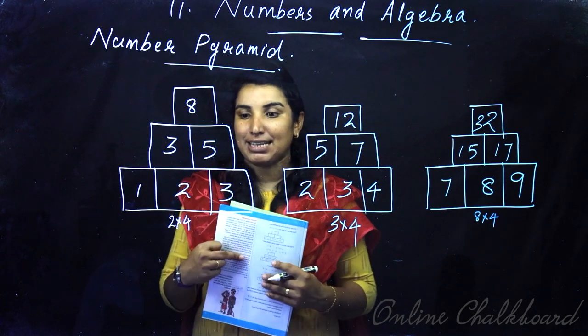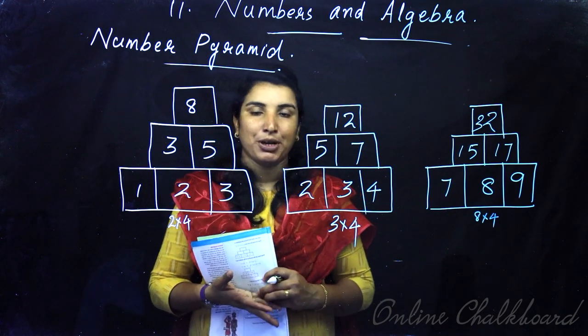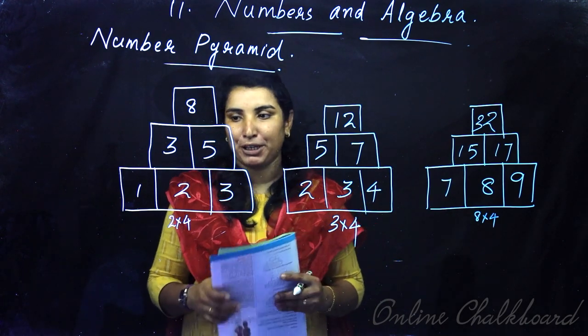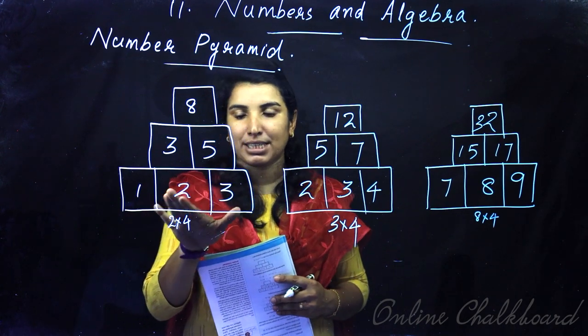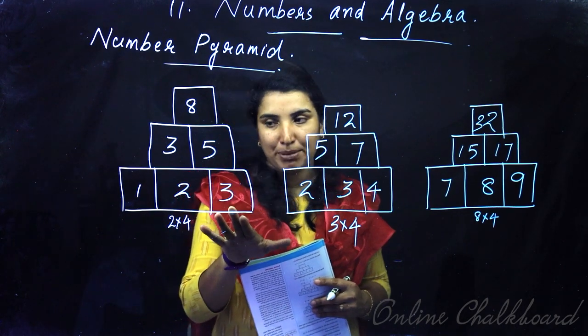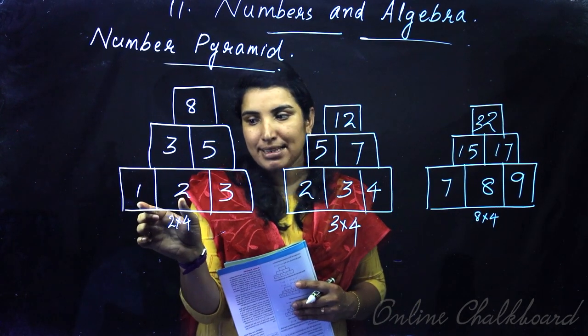This is a general property with 3 consecutive natural numbers. Then we have some adjacent names.